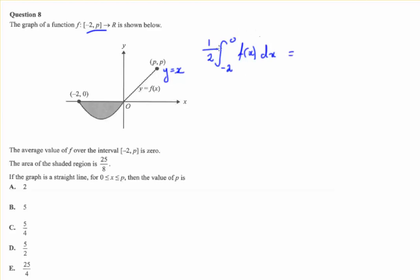Now we're told the value of this bit. We're told that the area of the shaded region is 25 over 8. So we know the value of this bit. We just have to put a negative sign there,